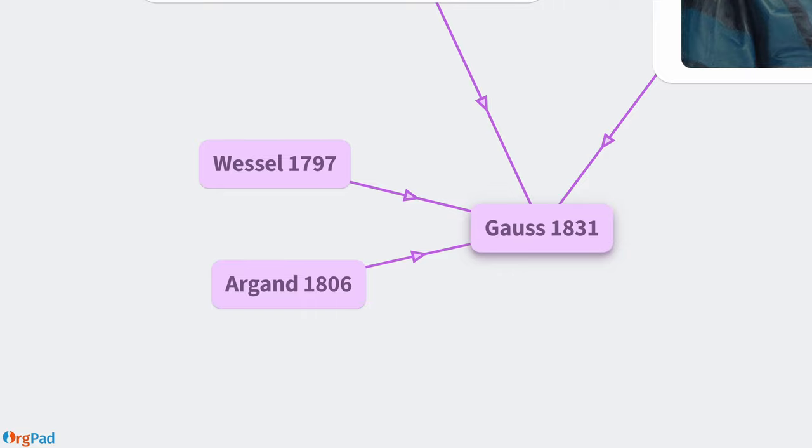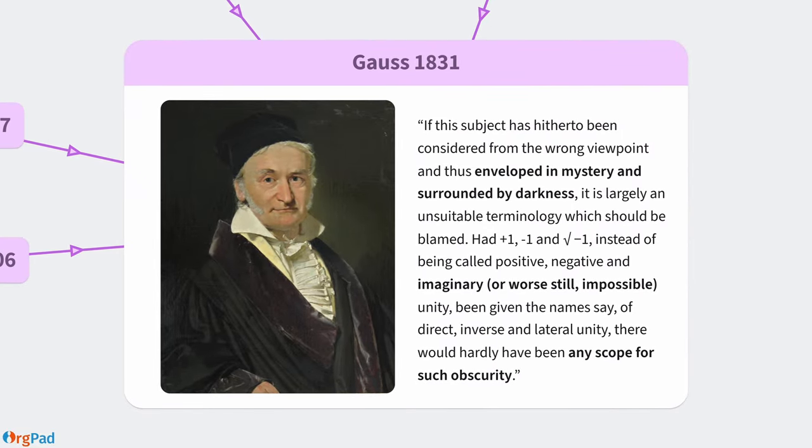While working on this video, I discovered a great quote by Gauss that accurately reflects my approach to explaining complex numbers. If this subject has hitherto been considered from the wrong viewpoint and thus enveloped in mystery and surrounded by darkness, it is largely an unsuitable terminology which should be blamed. At plus 1, minus 1, and square root of minus 1, instead of being called positive, negative, and imaginary, or worse still impossible unity, being given the names, say, of direct, inverse, and lateral unity, there would hardly have been any scope for such obscurity.